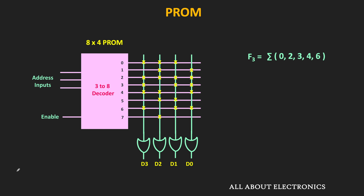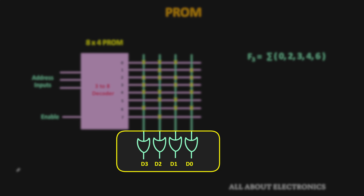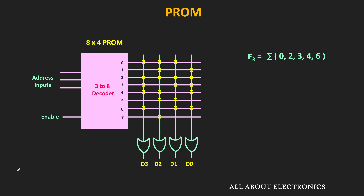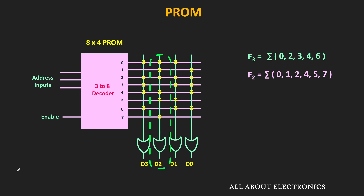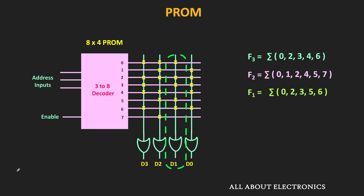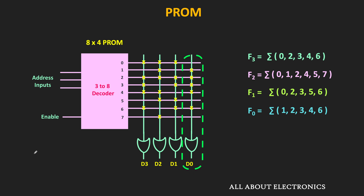In this 8x4 PROM, each output of the OR gate represents a specific Boolean function of three variables. Similarly, the output of the second OR gate, D2, is the summation of six min terms. Likewise, D1 is the summation of min terms M0, M2, M3, M5, and M6. And D0 is the summation of five min terms. That means using this 8x4 PROM, we can implement four different functions of three variables.